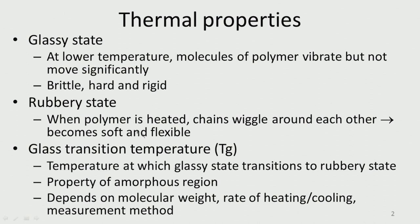The chains wiggle, so they become soft and flexible like rubber. The glassy state and rubbery state is a very important point, and that is known as the glass transition temperature, Tg. Tg is the glass transition temperature: above Tg the polymer becomes a rubbery state, and below Tg it will be in a glassy state.